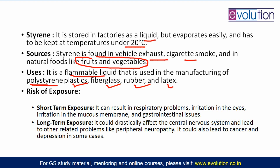What are the risks of exposure to styrene? Short-term exposure causes respiratory problems, irritation to the eyes and mucous membranes, allergic reactions, and gastrointestinal tissue effects. Long-term exposure affects the central nervous system and may lead to peripheral neuropathy, neural system damage, cancer and depression in some cases.